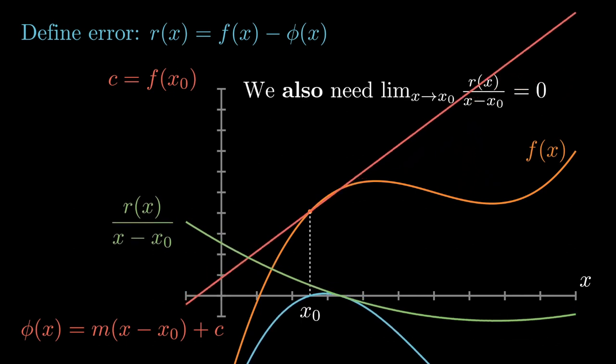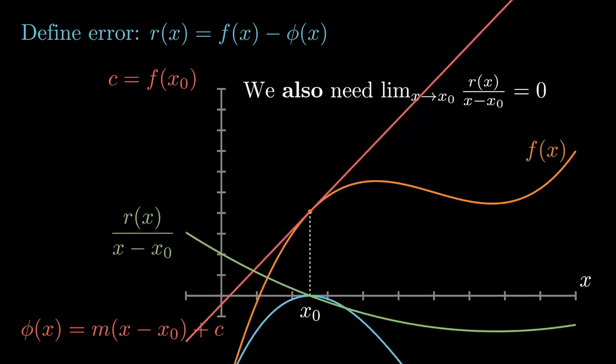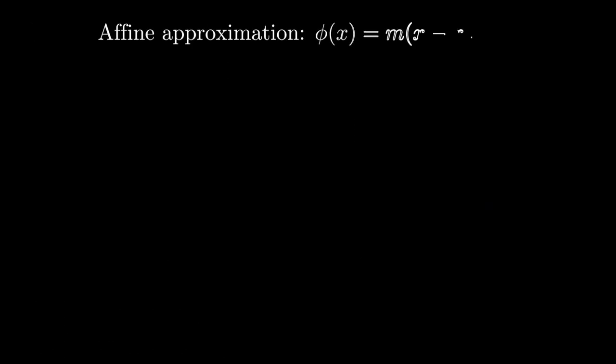That gives us different affine approximations and different slopes of the red line. As we keep varying m eventually we find a place where the green line intersects zero at x0. Now of course this isn't well defined because it's zero over zero but the limit does exist. Note that when that intersection happens that our red line is the familiar tangent line.